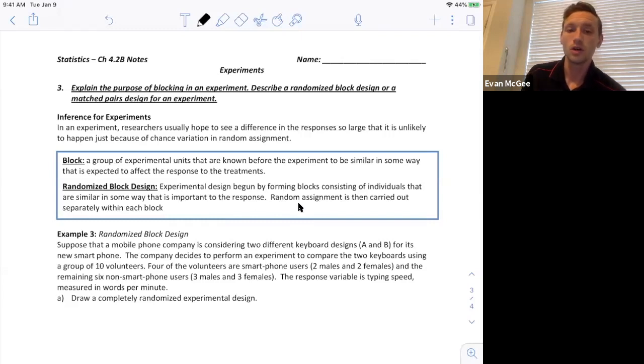So a randomized block design, it sounds similar to a stratified sample but this is not a sample. We're not taking samples here. We're just putting them in blocks which are similar within but they're different between the blocks. Let's take a look at an example to learn a little bit more about it.